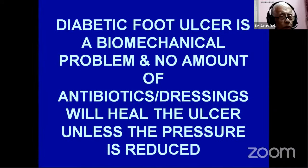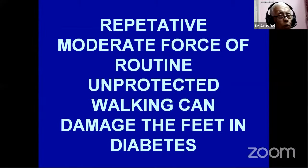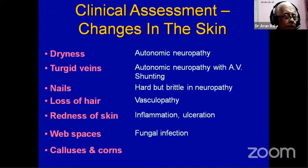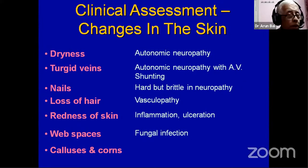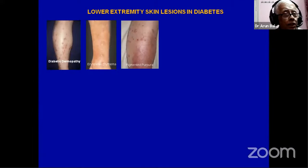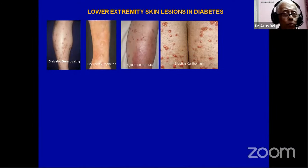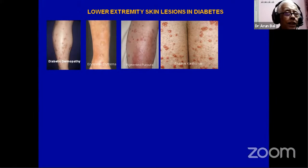Diabetic foot ulcer is a biomechanical problem — no amount of antibiotics and dressing will heal it unless you offload the ulcer-bearing area. Repetitive moderate force of routine unprotected walking damages the feet in diabetes in the presence of advancing neuropathy. Clinical skin changes include dry skin, turgid veins, loss of hairs, redness, brittle and hard nails, calluses, and corns. Most times dermatologists treat these symptomatically, but we need to understand these are directly related to hyperglycemia, the basic cause of neuropathy.